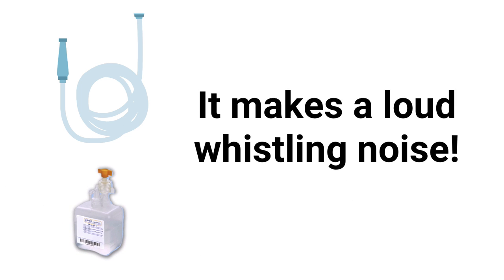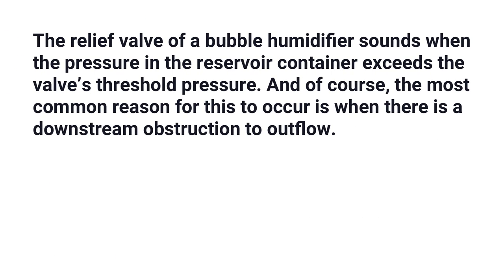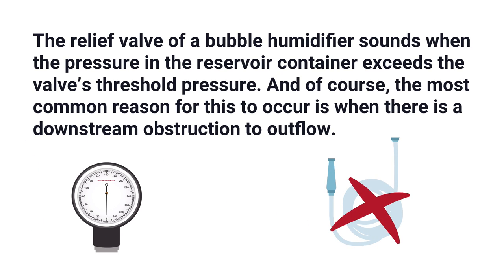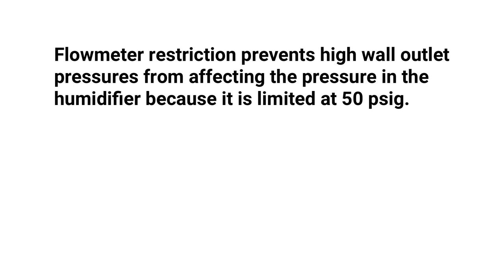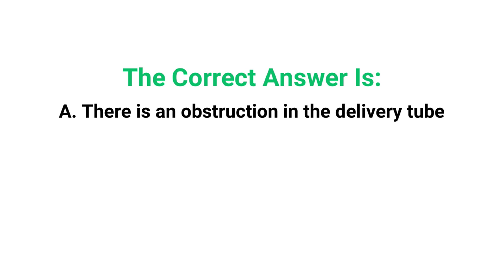The correct answer is A: there is an obstruction in the delivery tube. The relief valve of a bubble humidifier sounds when the pressure in the reservoir container exceeds the valve's threshold pressure, and the most common reason for this is a downstream obstruction to outflow. A flow meter restriction prevents high wall outlet pressures from affecting pressure in the humidifier because it is limited at 50 psig. Changes in patient ventilation would have no effect on the pressure in the humidifier.